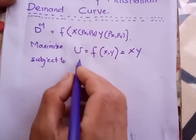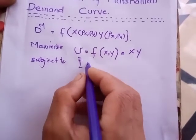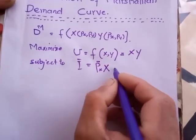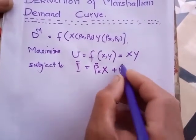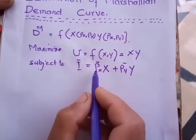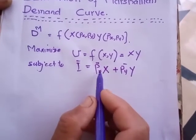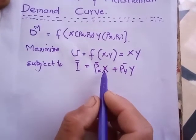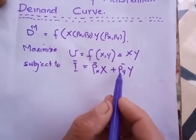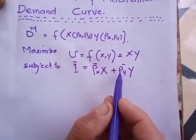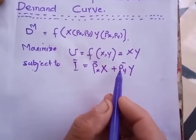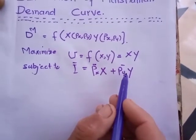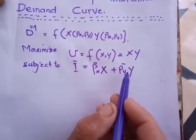The second function is constraint function. Income is given, so price of x, which is also given, into x plus Py into y. Here Px is price of x which is determined in the market, and x is the units of commodity x. Similarly, Py is the price of commodity y which is determined in the market, and y is the units of commodity or service.